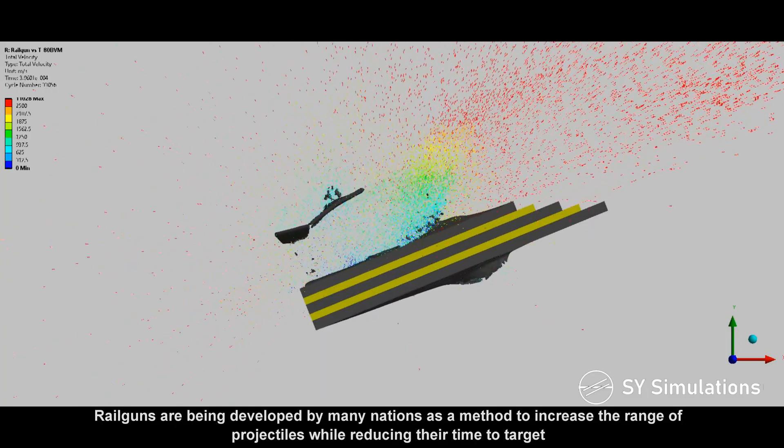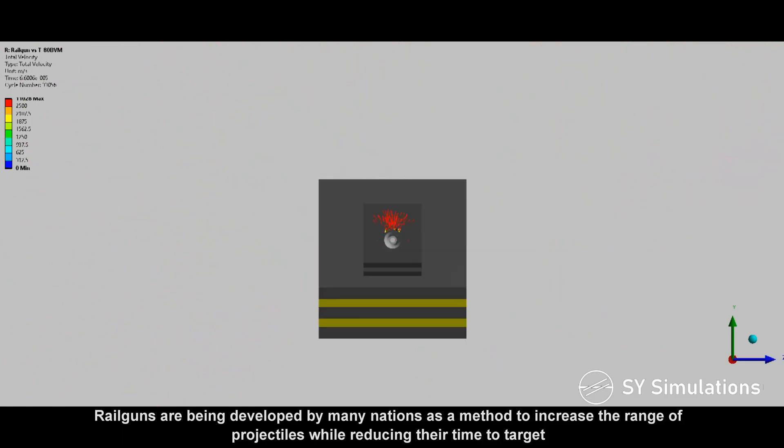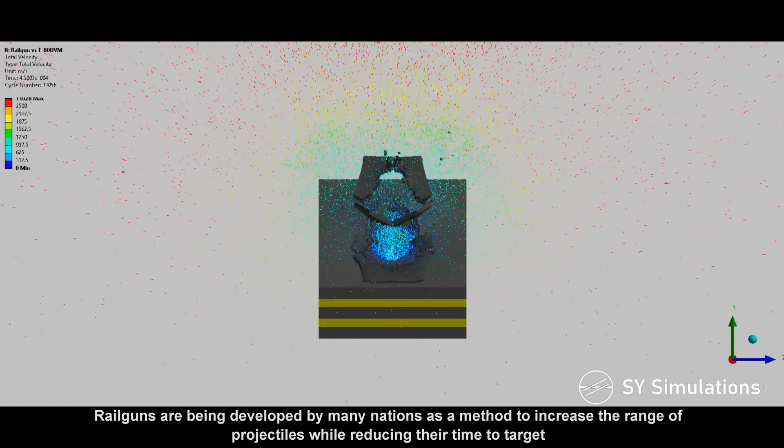Railguns are being developed by many nations as a method to increase the range of projectiles while reducing their time to target.